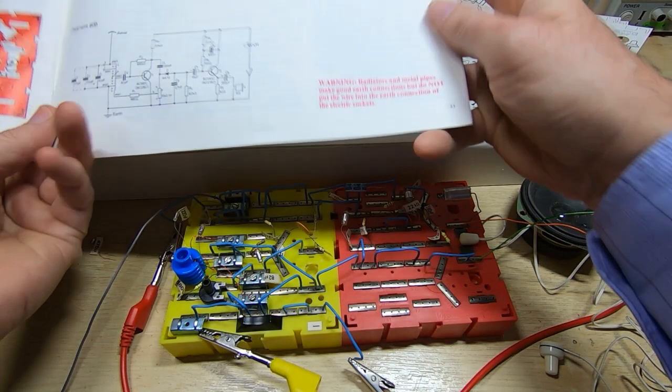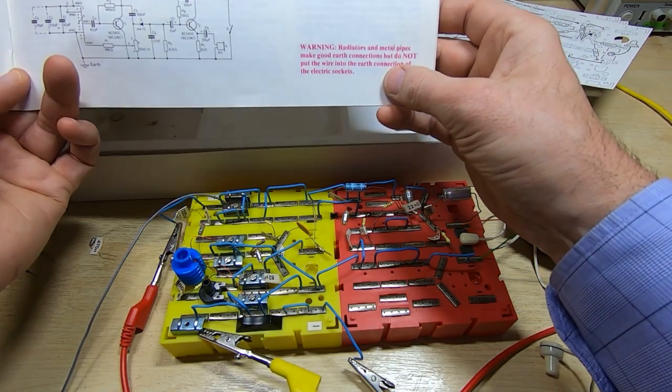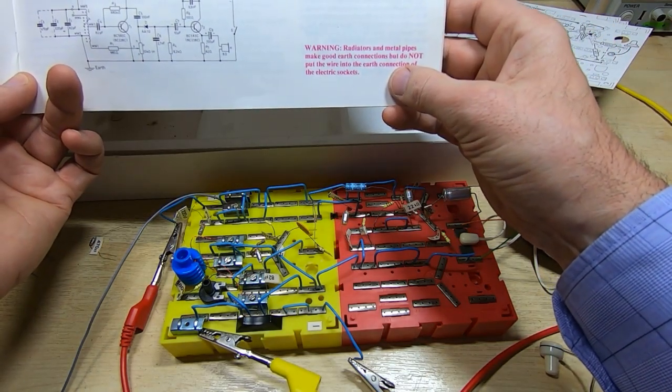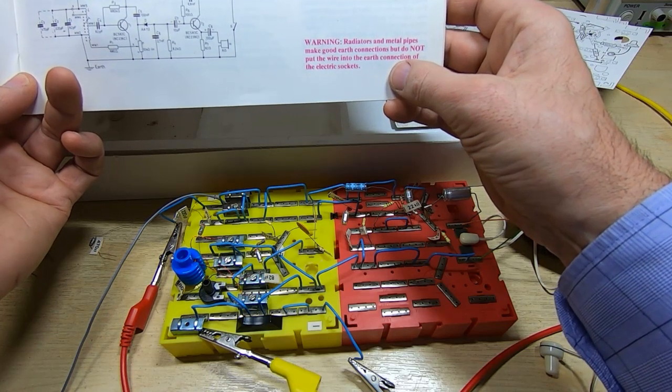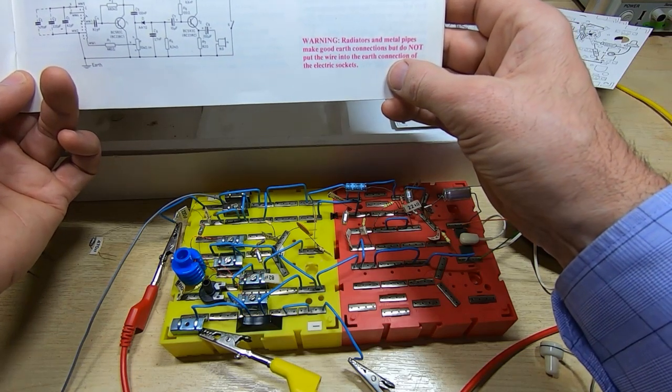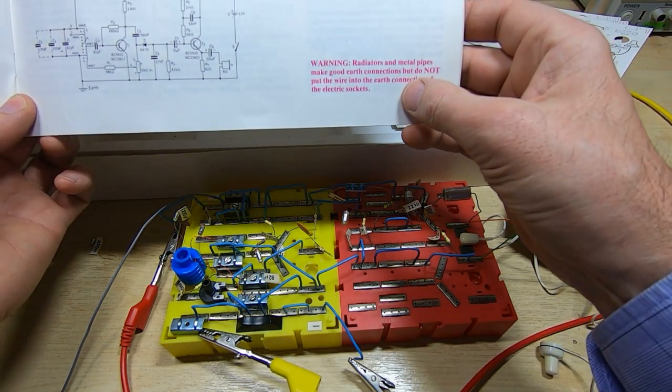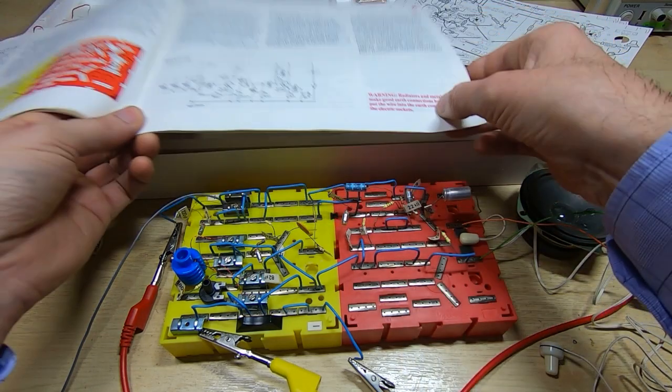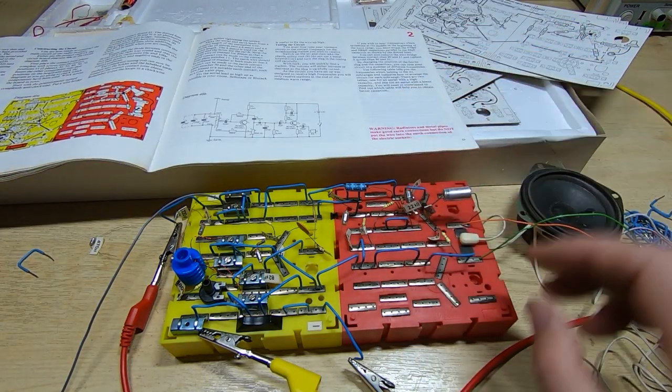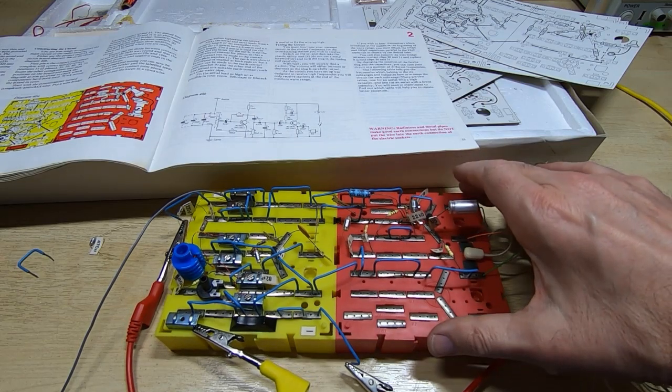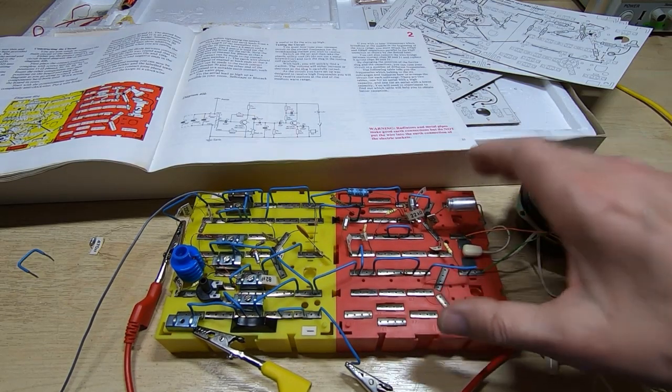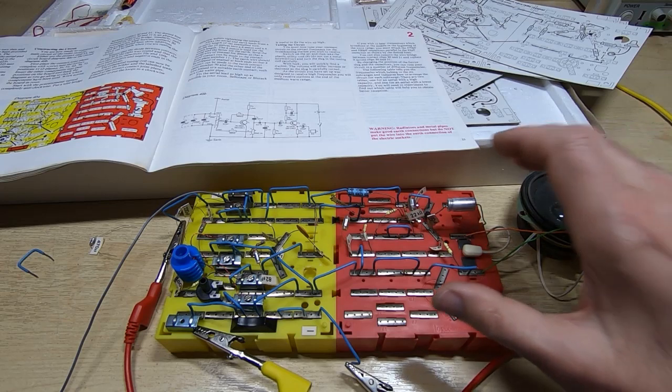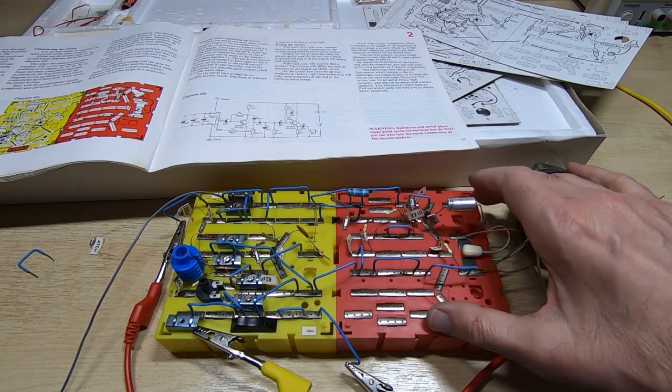Interesting warning down here: "Warning - radiators and metal pipes make good earth connections, but do not put the wire into the earth connection of electric sockets." I wonder why not - I'll be trying that next. That's it, just a bit of fun. I never had one of these back in the day, but finally I've got one half a century late. It's still a lot of fun.